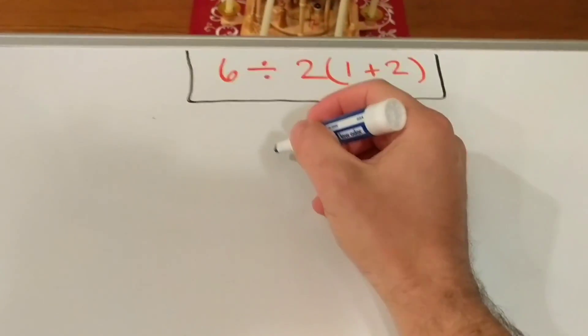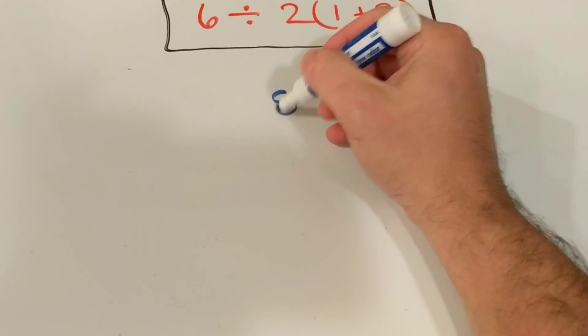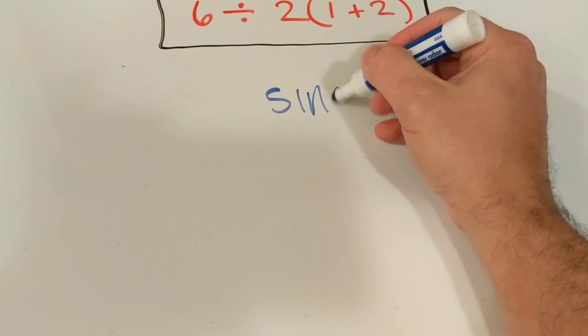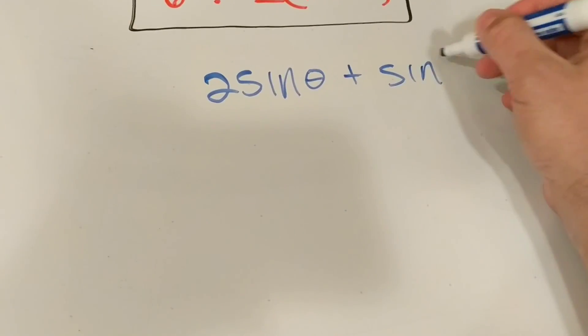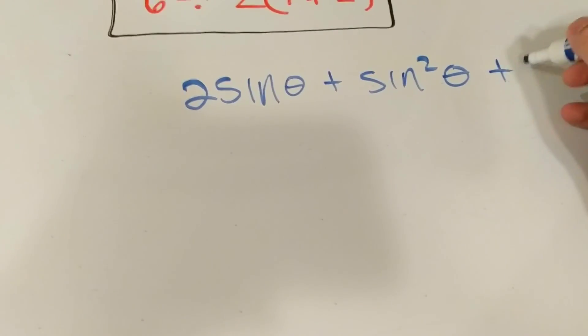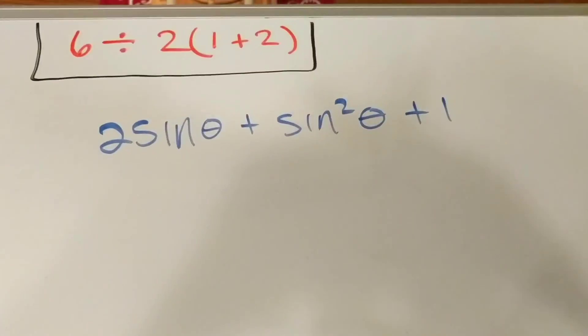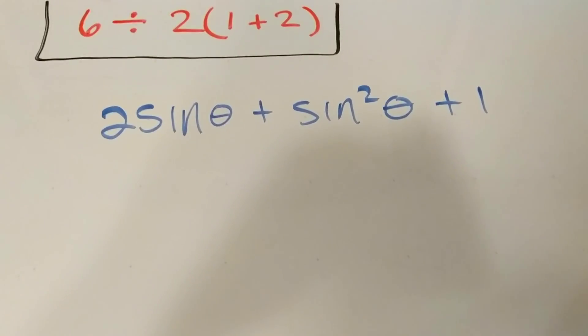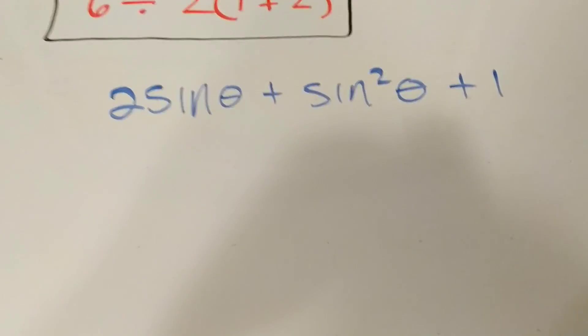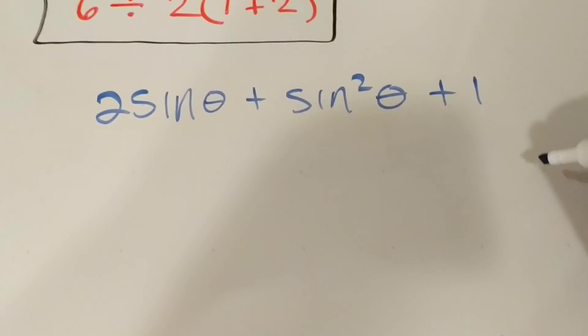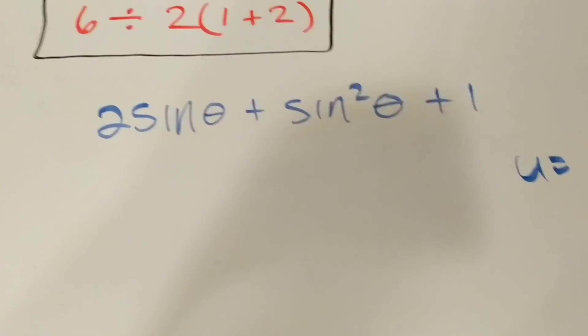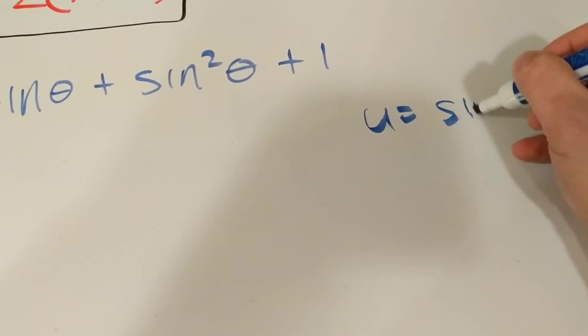So an example of that would be, let's say you're in the middle of a problem and you came up to 2 sine theta plus sine squared theta plus 1. And you're lost as to what you should do next with the problem because you have all these sines and everything going on.